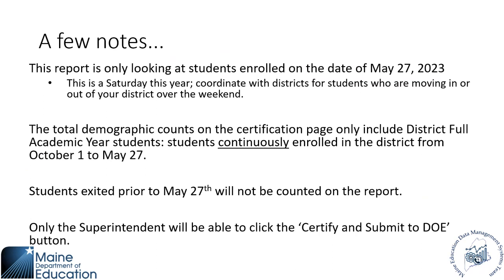A few notes about this report: once again, this is a Saturday, May 27th, so you'll want to coordinate with districts and make sure that students who move are accounted for for assessment purposes. Any students who are district full academic year and move right before May 27th should not be on your report — they should go to another district. District full academic year students are continuously enrolled from October 1st to May 27th. Students exited prior to May 27th will not be counted on the report, and only your superintendent will be able to click the certify and submit to DOE button.